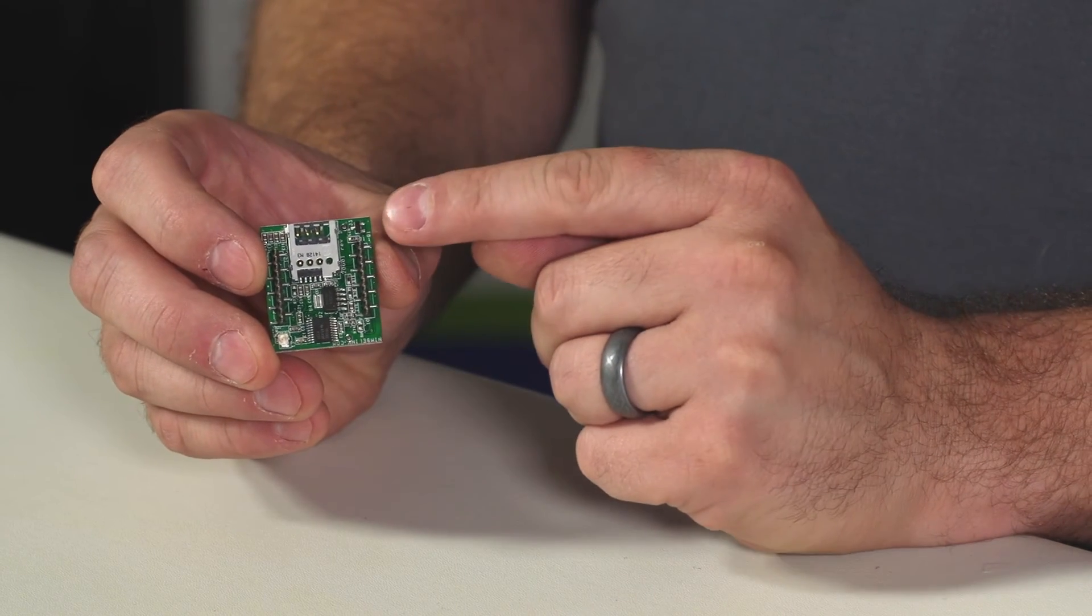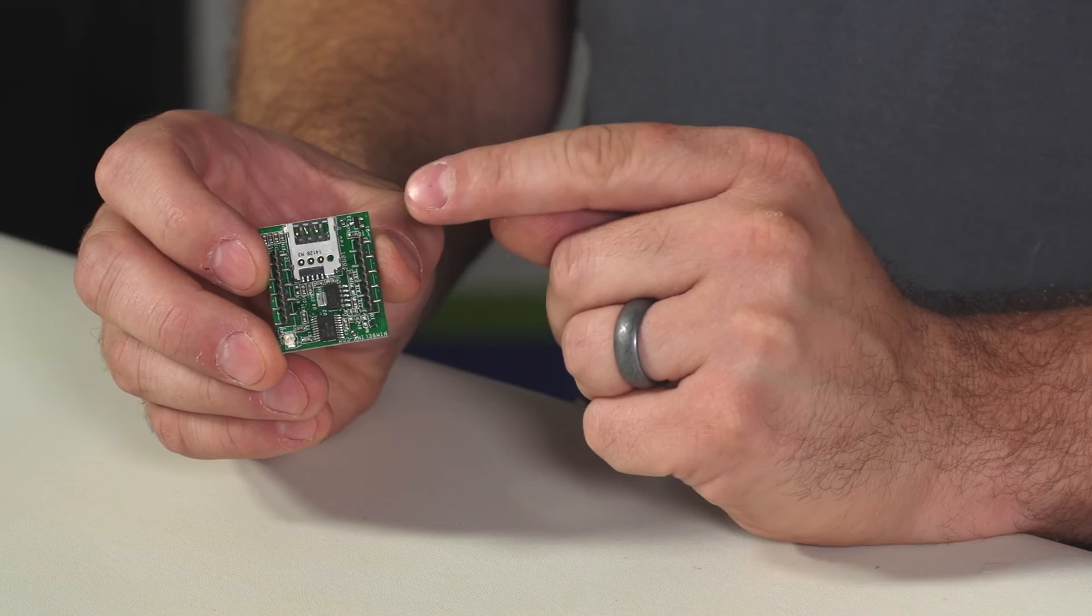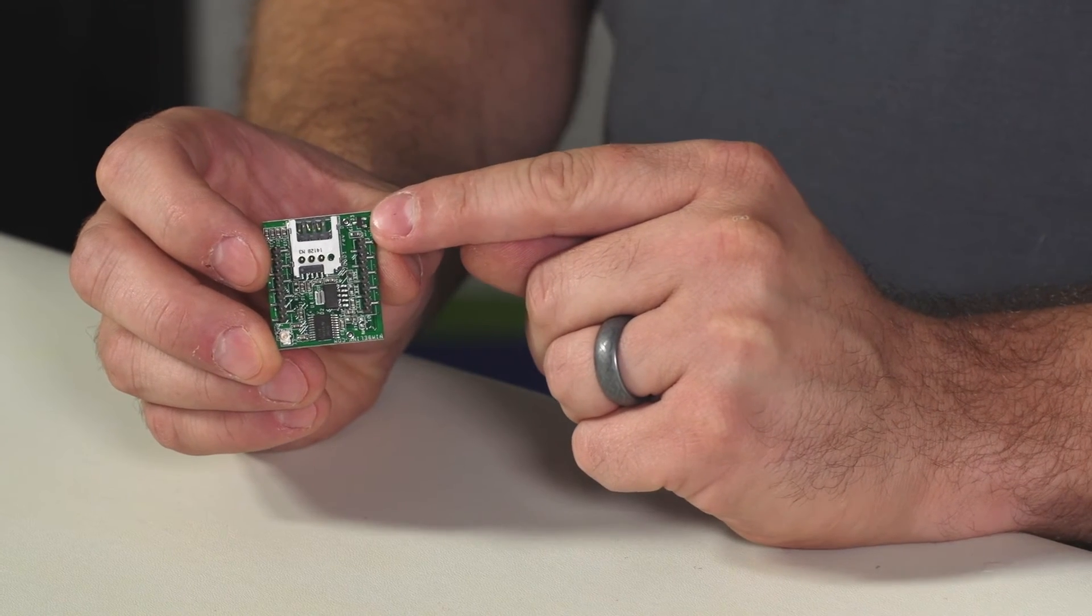On the backside you'll also find the XB interface. Pin 1 can be found up in this corner of the product.